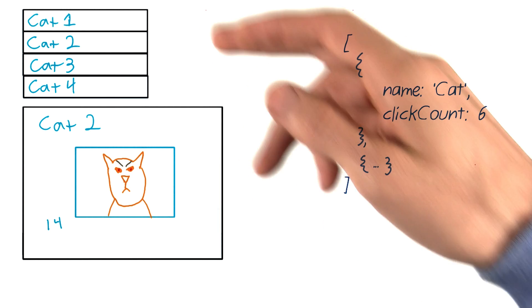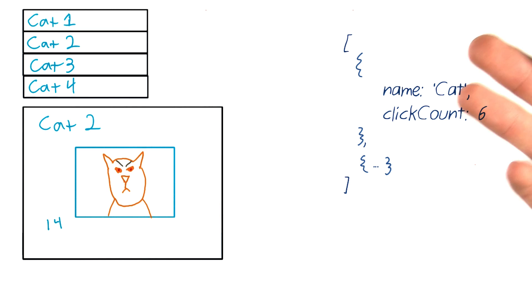Now the view, well actually, if we want to, we can split this up into two views. First, we have the list of cats, and second, we have the cat viewing area.